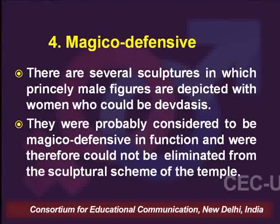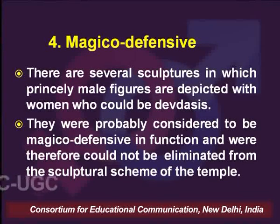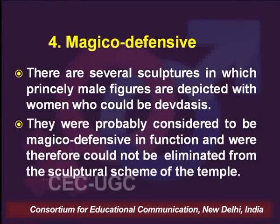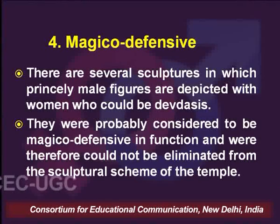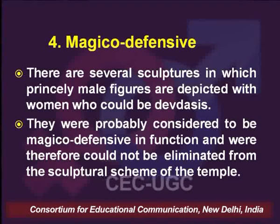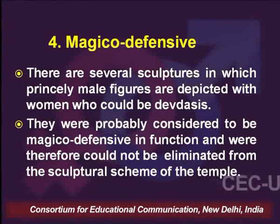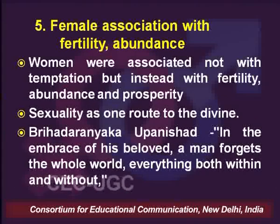The next interpretation while dissecting the iconography of this period is that of the Magico-Defensive. There were several sculptures in which princely male figures were depicted with women who could be Devadasis. These were probably considered to be Magico-Defensive in function, and therefore could not be eliminated from the sculptural scheme of the temple, as had been prescribed by several Silpa Shastras.